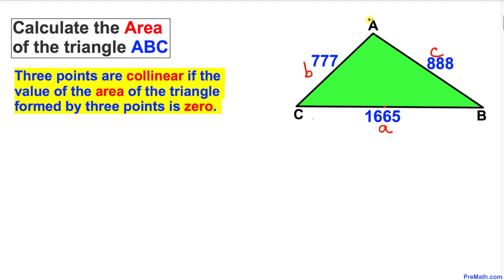So all these points A, B, and C are collinear. That means they lie on the same line. Therefore, three points are collinear if the value of the area of the triangle formed by these three points is zero. That means the area of this triangle is zero.